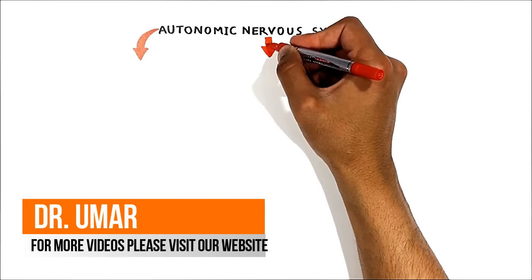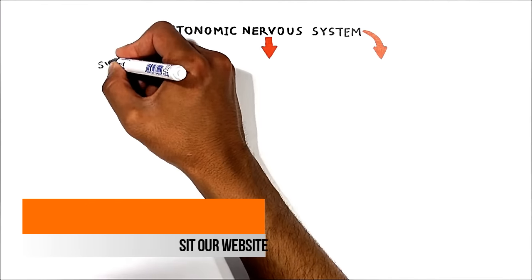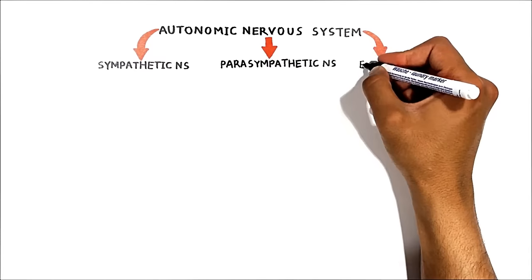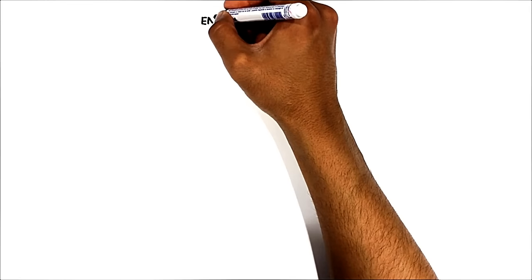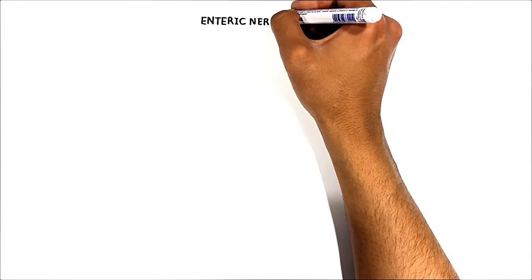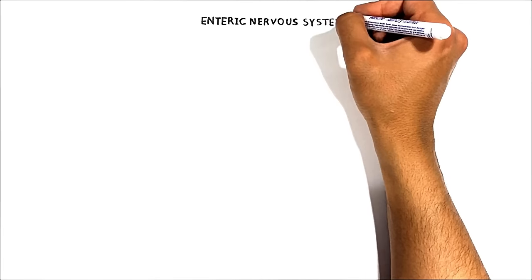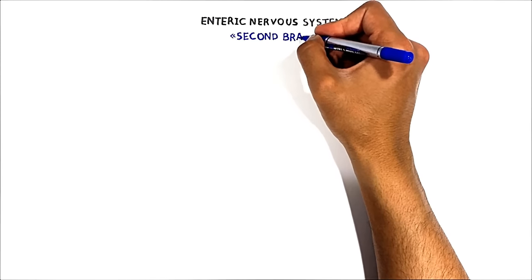The autonomic nervous system is composed of three subdivisions: the sympathetic nervous system, parasympathetic, and enteric nervous system. In this video, we will talk about the enteric nervous system and a few words about the sympathetic and parasympathetic nervous system. It is very important to know that the gastrointestinal system has its own nervous system, called the enteric nervous system. Many neurophysiologists call it the second brain, because the enteric nervous system can and does function autonomously, but it also communicates with the central nervous system through the parasympathetic and sympathetic nervous system.